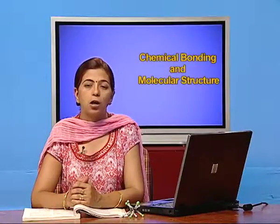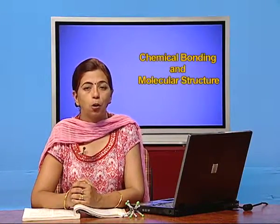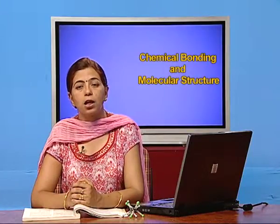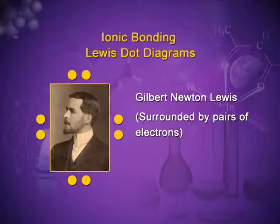The inner electrons do not participate in chemical bonding. So while representing a chemical bond — whether ionic or covalent — Lewis gave a Lewis dot formula, also called Lewis symbols, in which he represented the valence electrons through dots. That is why they are known as Lewis dot structures or Lewis dot symbols.